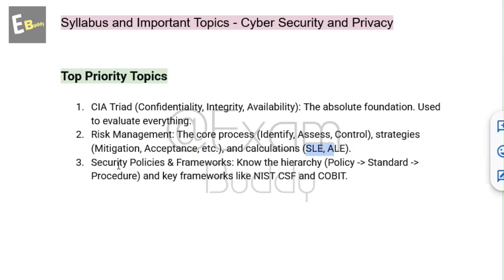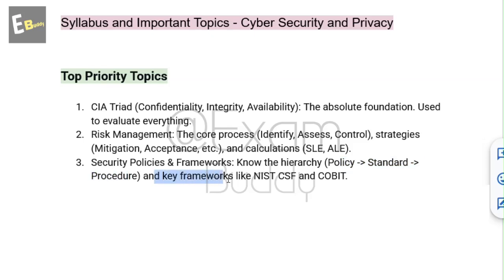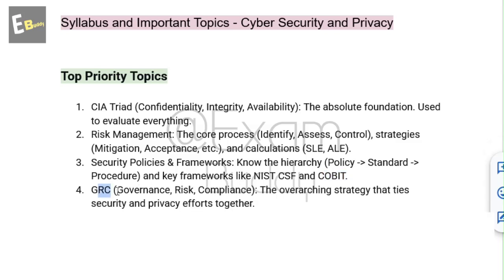The third top priority topic is Security Policies and Frameworks. Here you need to study their hierarchy: policy, standard, and procedure, along with key frameworks like NIST CSF and COBIT. The fourth priority topic is GRC — Governance, Risk, and Compliance — which is the overarching strategy that ties security and privacy efforts together.